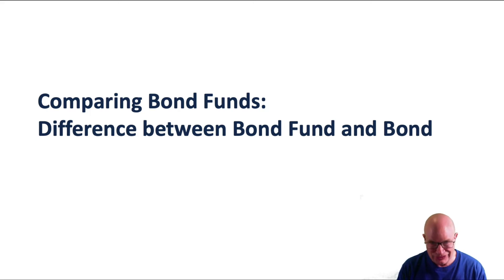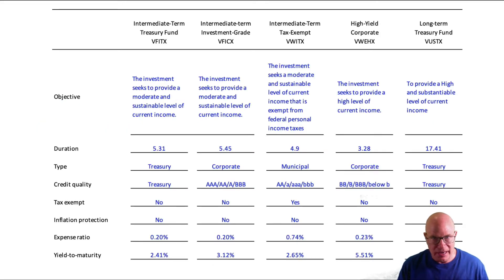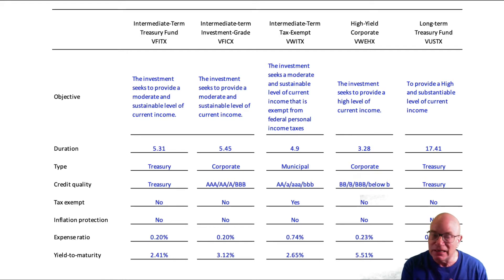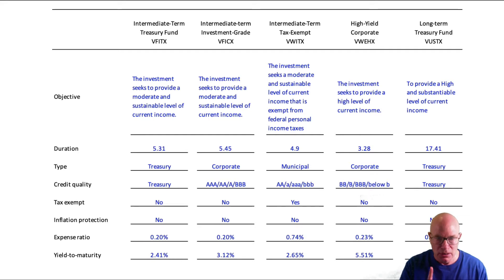There is a difference in the way returns happen between a bond fund and a bond, and we're going to illustrate that in this module. We have had five bond funds that we've been talking about, all Vanguard funds. You could buy these mutual funds, and on a daily basis they're going to calculate a net asset value for the shares you hold each day. Each day you will see on your financial statements the capital gains and losses associated with these funds, and that has an implication for holding a bond fund versus a bond in and of itself.